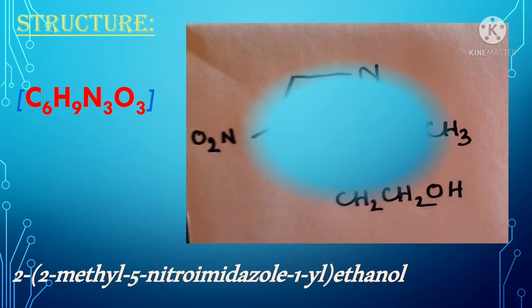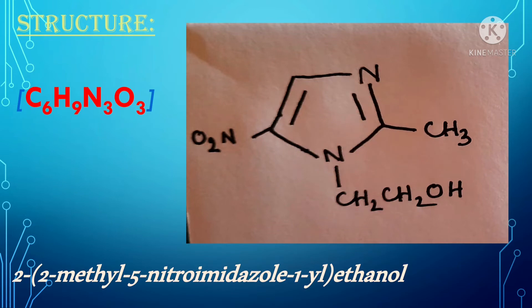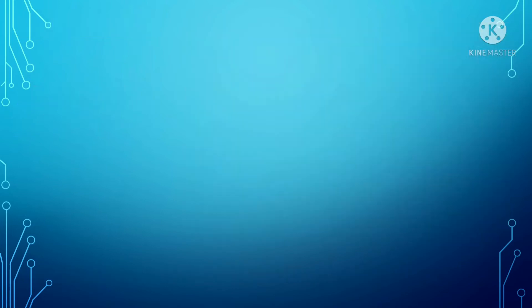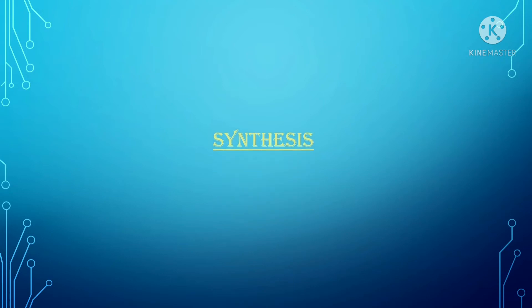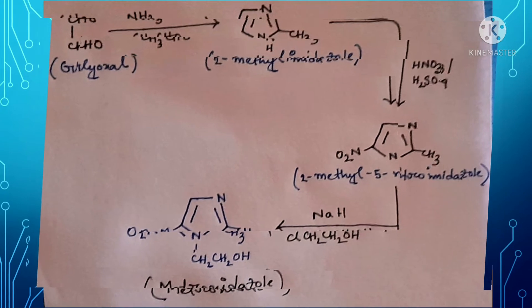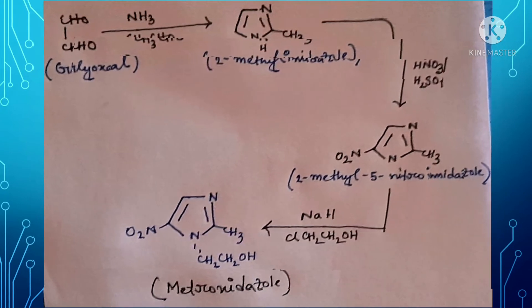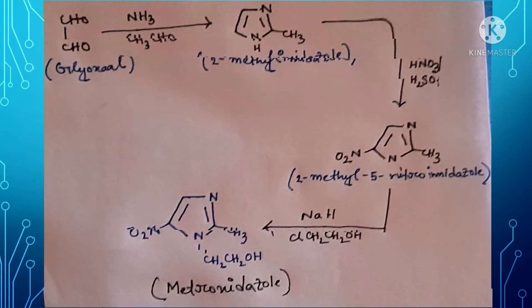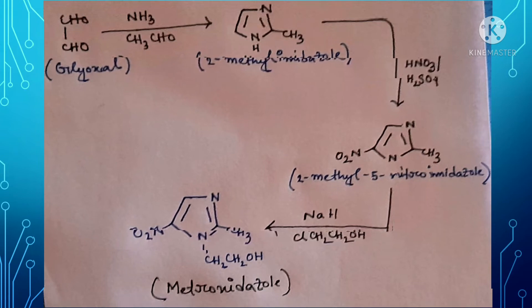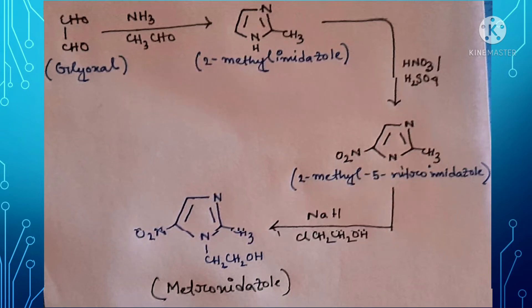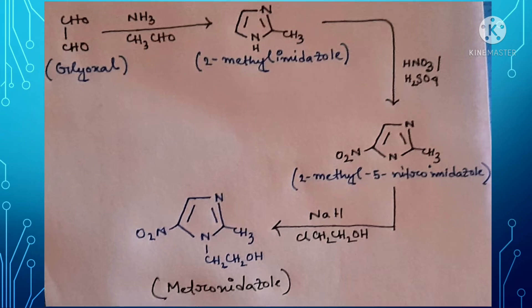Now the synthesis of metronidazole. In the synthesis, first glyoxal is reacted with NH3 and acetaldehyde, which produces 2-methylimidazole. This 2-methylimidazole undergoes nitration reaction and produces 2-methyl-5-nitroimidazole, which further reacts with NaH and 2-chloroethanol to produce our final product, metronidazole.